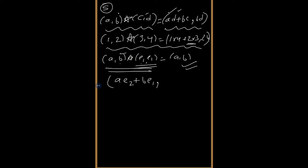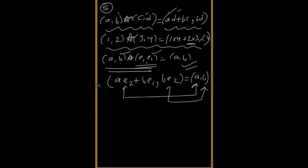Now the second element and fourth element: b·e₂, and this should be equal to a, b. Now compare it. First comparison and second comparison. So we find b·e₂ equal to b.